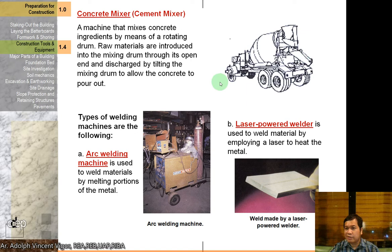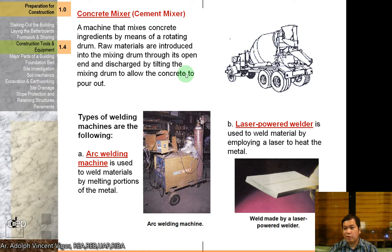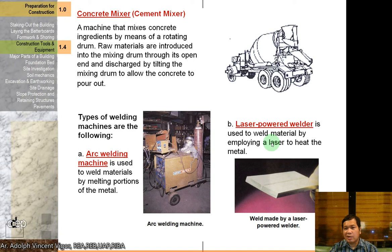A concrete mixer truck mixes concrete on the way to the site. For smaller residential construction, smaller versions are used — driven by a rotating motor or the most common manual mixing of concrete. For welding machines: the arc welding machine joins materials by melting portions of the metals, while a laser-powered welder uses a laser beam to hit and weld the metal.